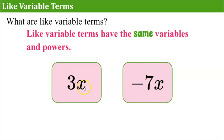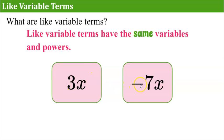So 3 is the coefficient of the variable term 3x, and negative 7 is the coefficient of the variable term negative 7x, and these are like terms because we could add them or subtract them. Understanding that like variable terms have the same powers, these both have an invisible exponent of 1 — x to the 1 — but they could be 3x squared and negative 7x squared and still be like terms. So same variable with the same exponent or power.